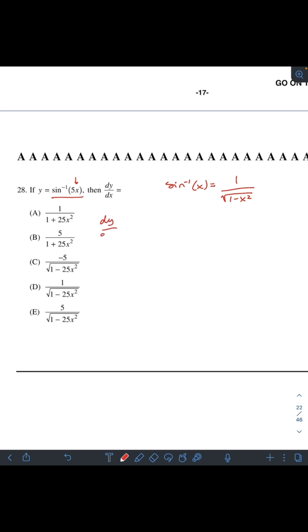So we get dy/dx to be 1 over square root 1 minus 5x squared times the derivative of the inside function, which in this case would be 5. This simplifies to 5 over square root 1 minus 25x squared, or answer choice E.